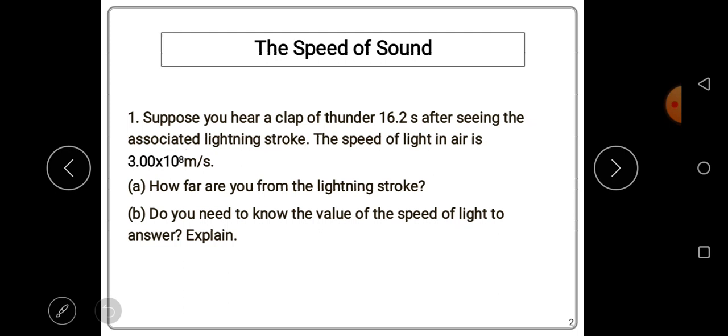The speed of light in air is 3.00 times 10 to the power 8 meters per second. Part a: how far are you from the lightning stroke? So they want us to find the distance from the lightning stroke.